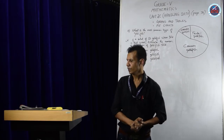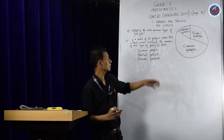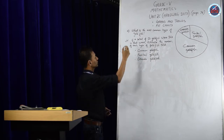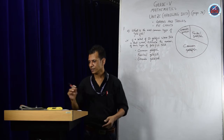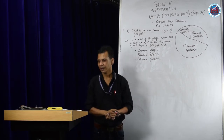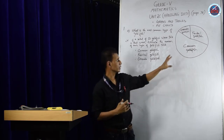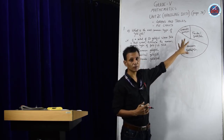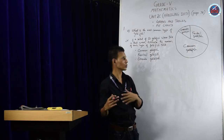Now we're going to do pie chart. This is question number one. A pet shop sells a range of fish. They have provided a pie chart — the definition of everything is in my previous video, please go through.